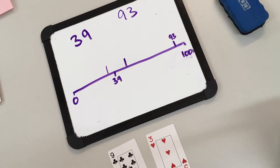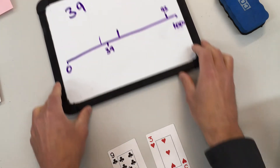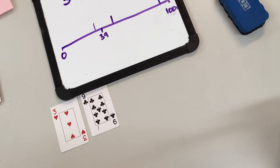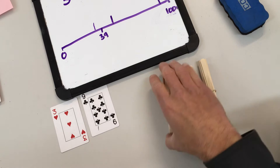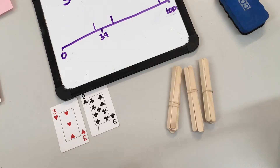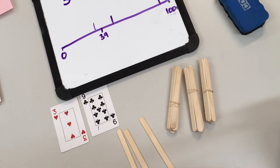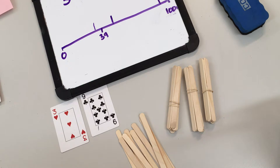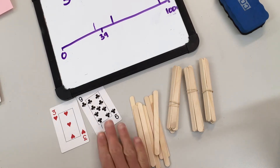The next step might be to make your smallest number with the paddle pop sticks. I've got bundles of 10, so I need to get three tens because I know that three tens is 30, and then I need to get nine ones, and I can represent my number that way.